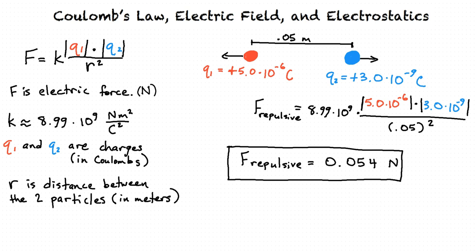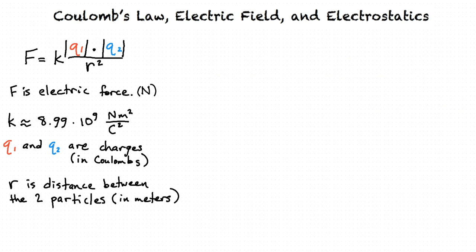Now let's talk about electric field. An electric field is a region around a particle in which an electric force would be exerted on other particles. On a positively charged particle, the electric field is pointed radially outwards, and on a negatively charged particle, the electric field is pointed radially inwards.